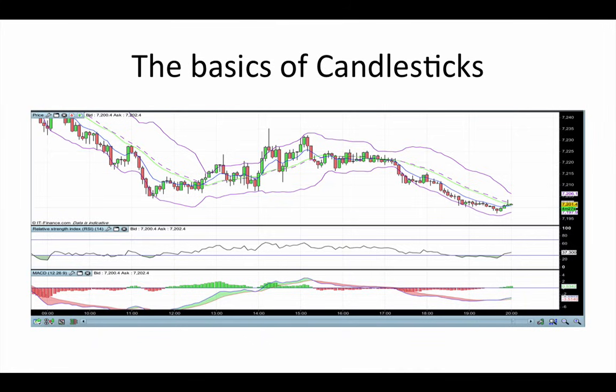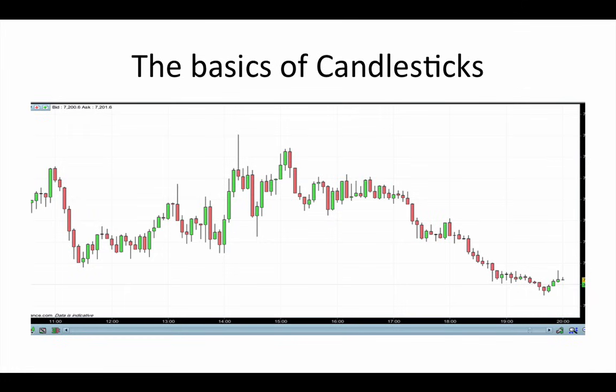If we strip away all of the indicators from this chart, what we're left with is this. I took this from a five-minute Forex chart. What you're looking at now is the raw data — what would be called naked price action. This is the most important information for any trader. It tells you exactly what the price is doing at any given period. Any of the indicators you may see overlaid on the screen all take their information from the raw data of the price action.